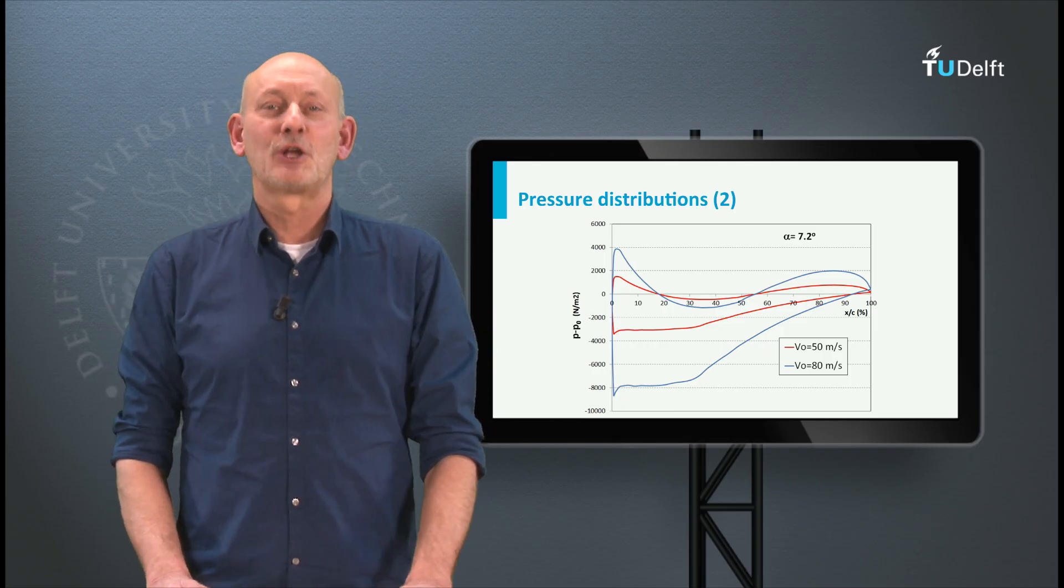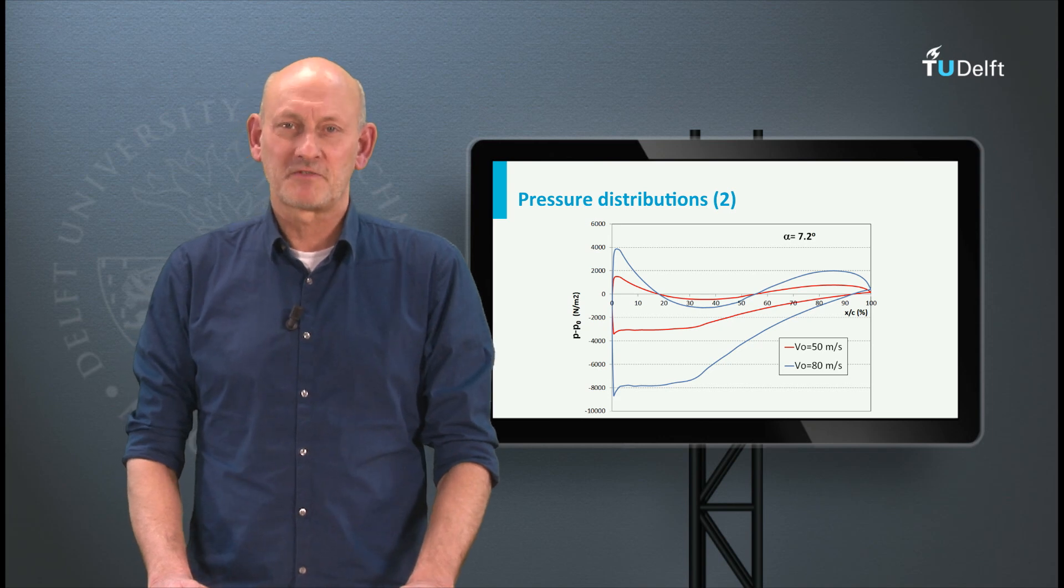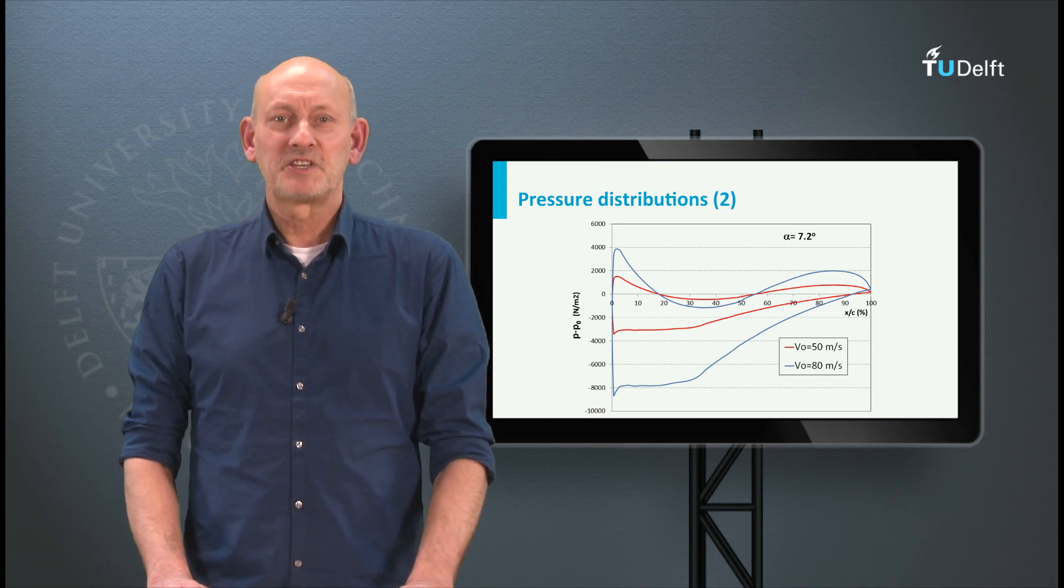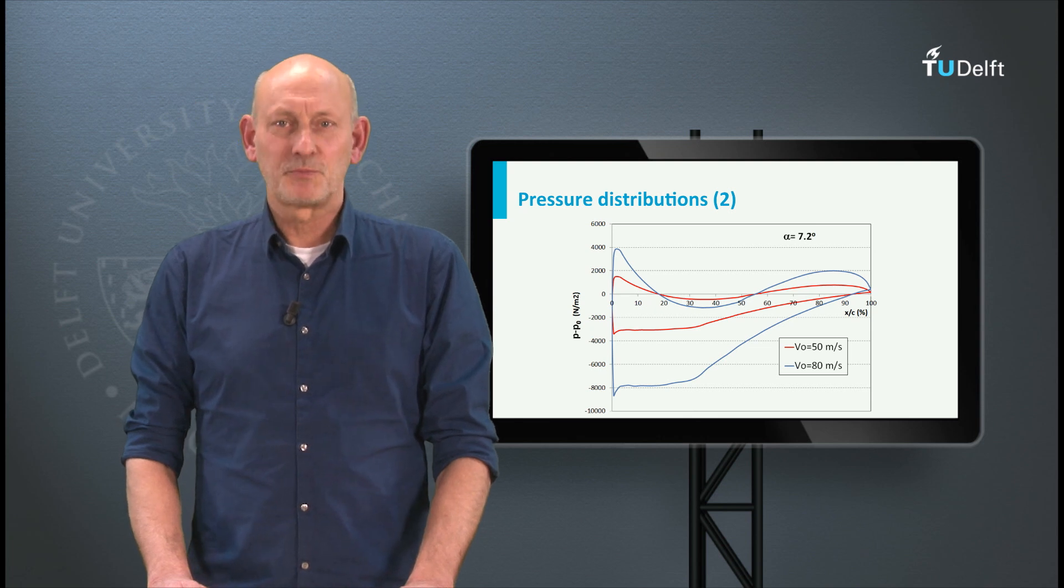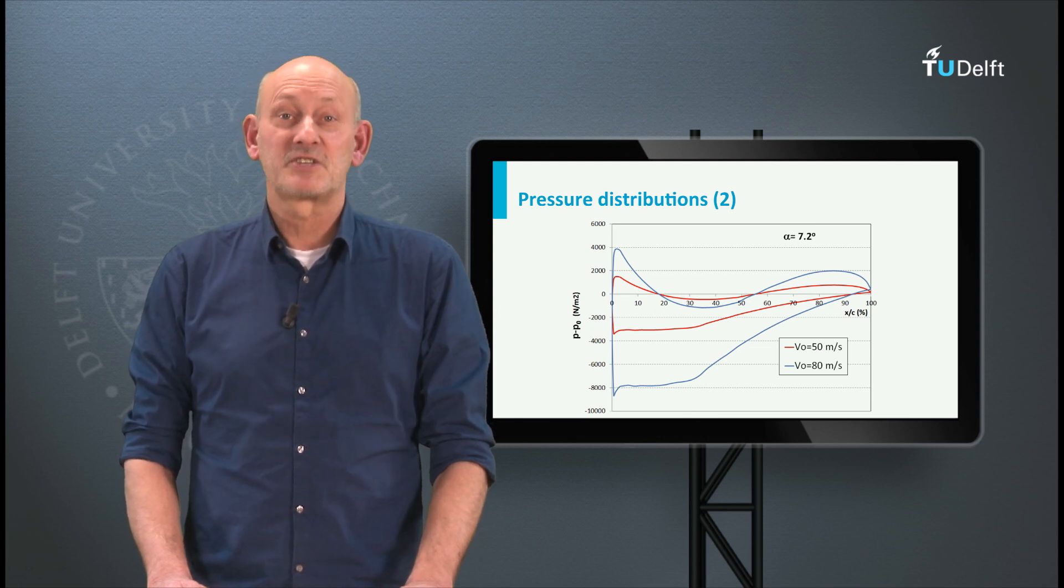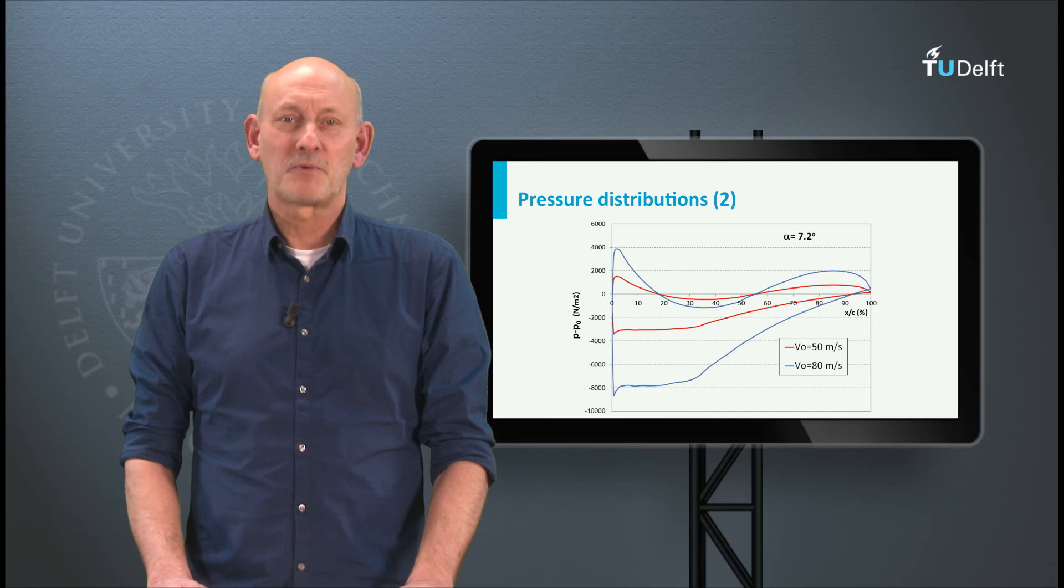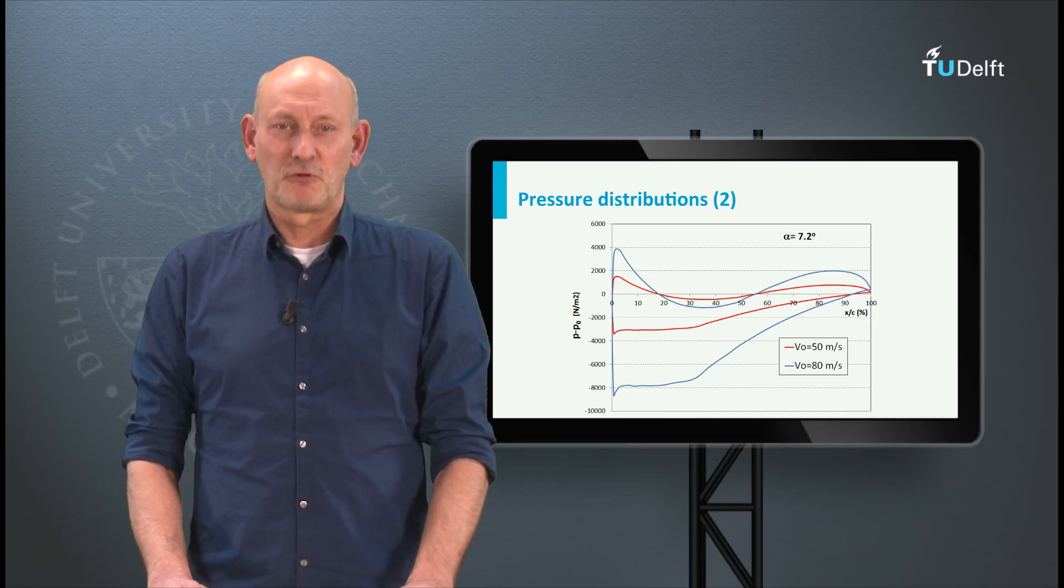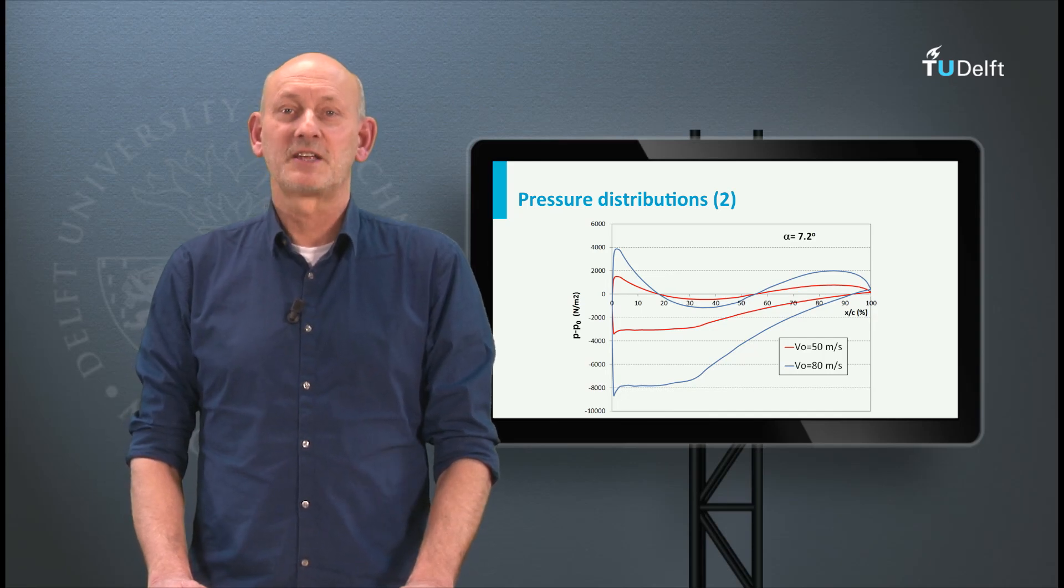The highest pressure can be found at the lower surface, in the upper part of the graph. Due to the typical S shape of the airfoil lower surface, the pressure distribution also shows varying static pressures. Also, here the pressure increases between 40% and 85% of the chord.